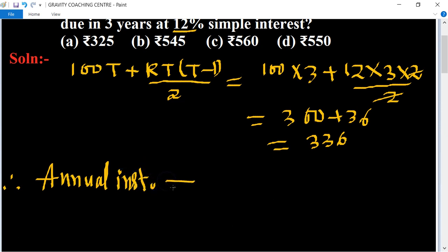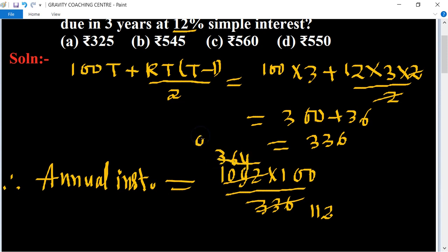The total amount is 1092 multiplied by 100 upon 336. So cancel by... the total amount is 1092. Now table of 4: 9 times 4 is 36 and 4 times 1 is 4, 4 times 2 is 8.